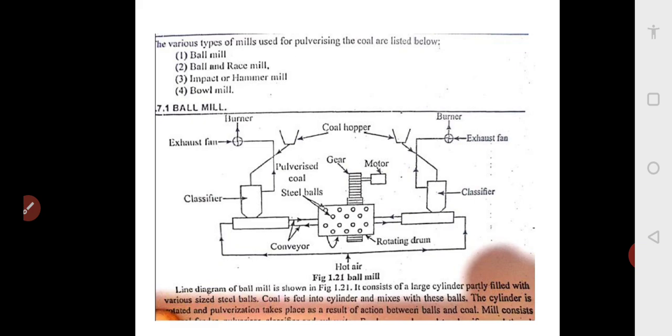You can see this ball mill. There is a coal hopper here. The coal comes to the coal hopper, and from the hopper, the coal is sent to the classifier. The classifier will classify whether it is pulverized coal or lump coal, because both will be there.